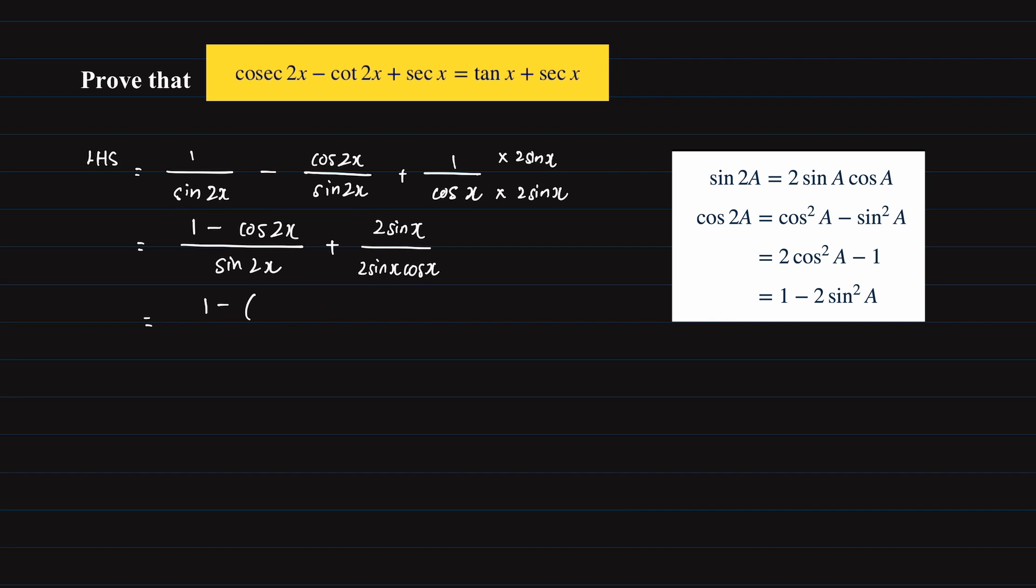let us choose 1 minus 2 sine squared x from the cosine double angle formula, because we can try to convert them into sine x so that we can simplify the terms, plus 2 sine x over 2 sine x cosine x. Now, this is because sine 2x is 2 sine x cosine x.